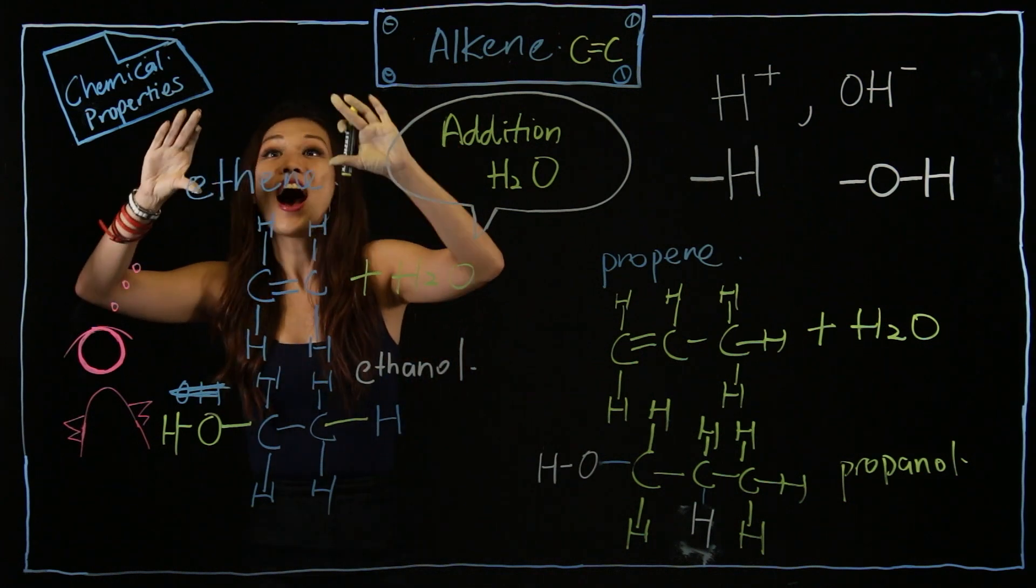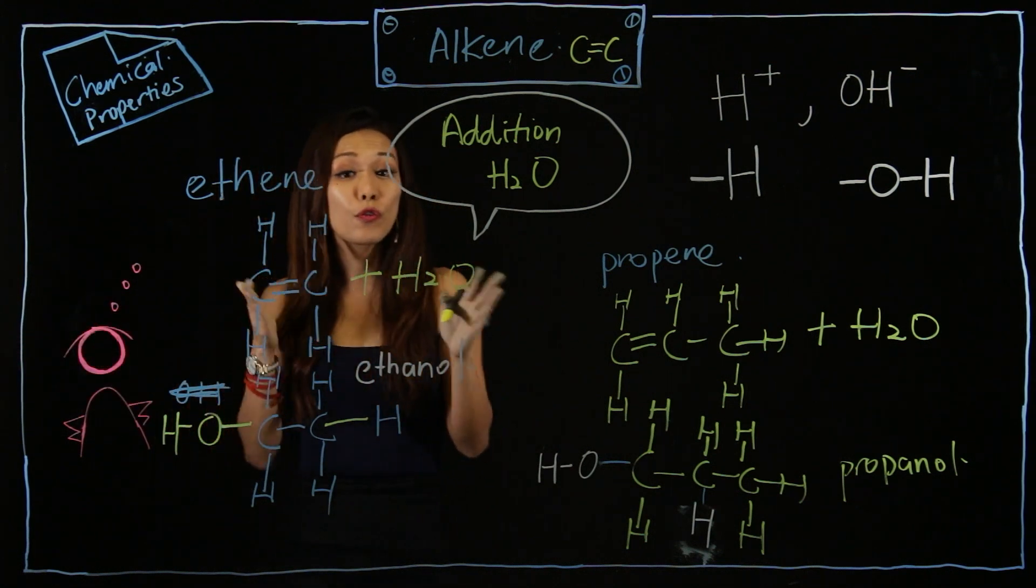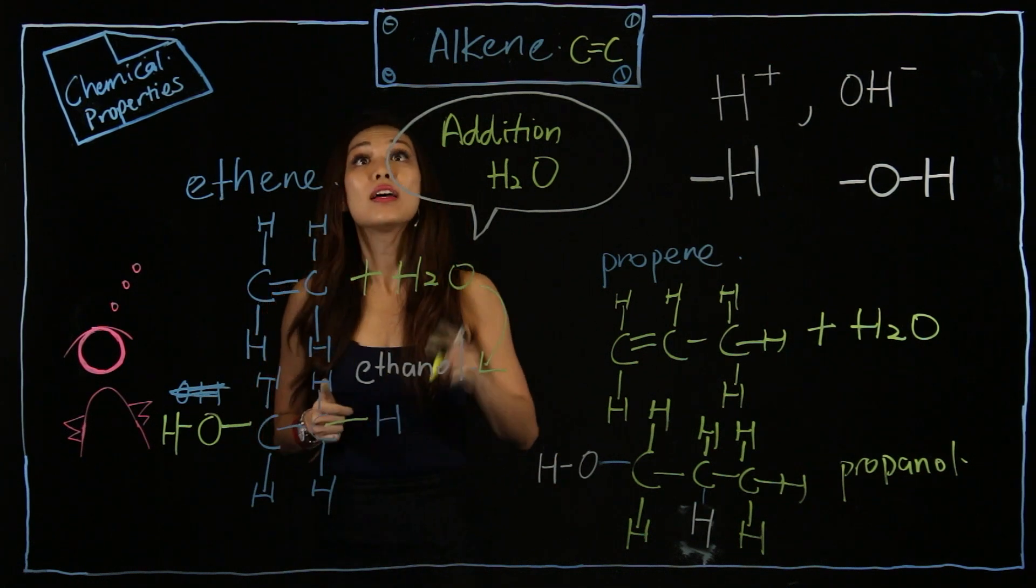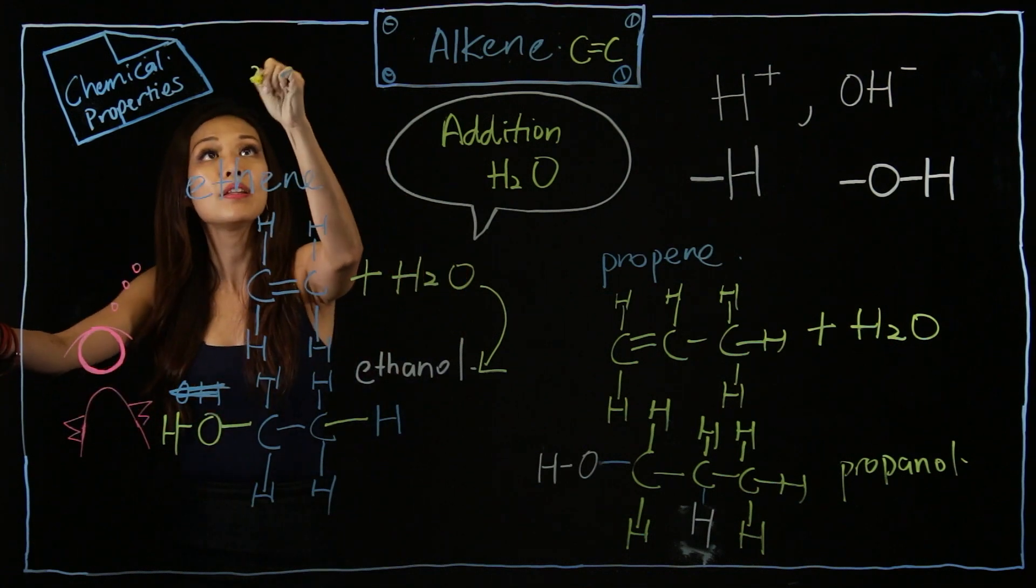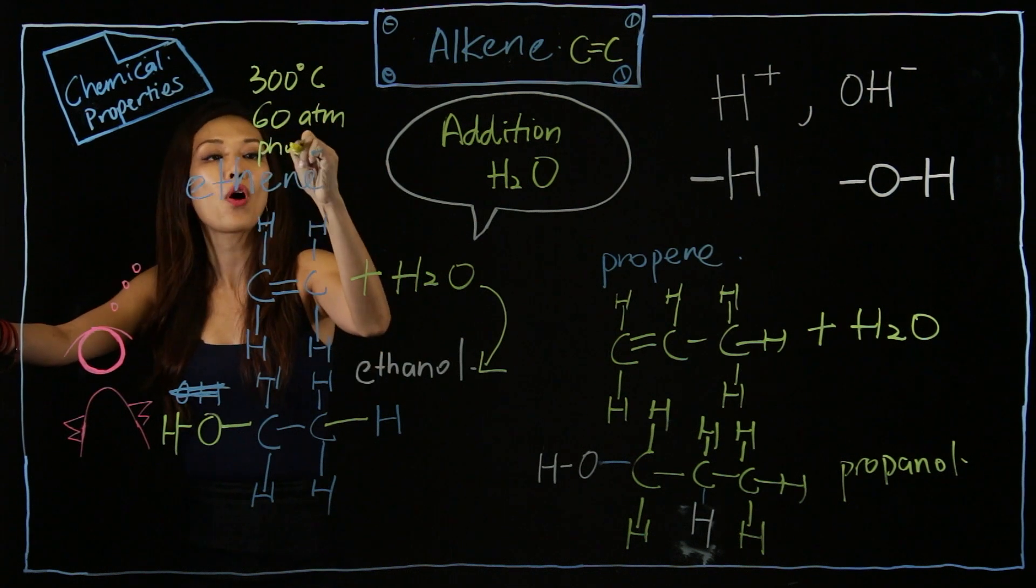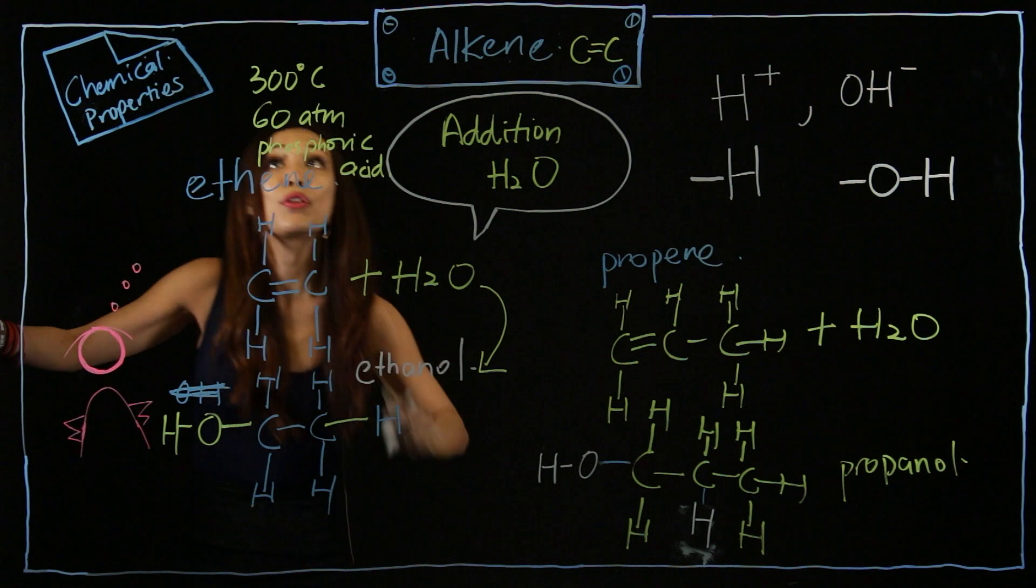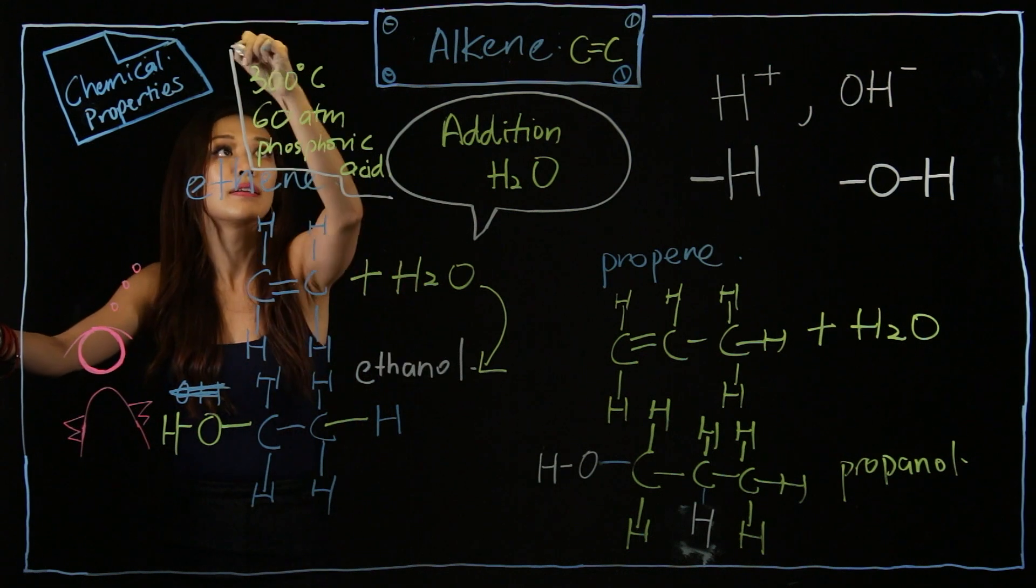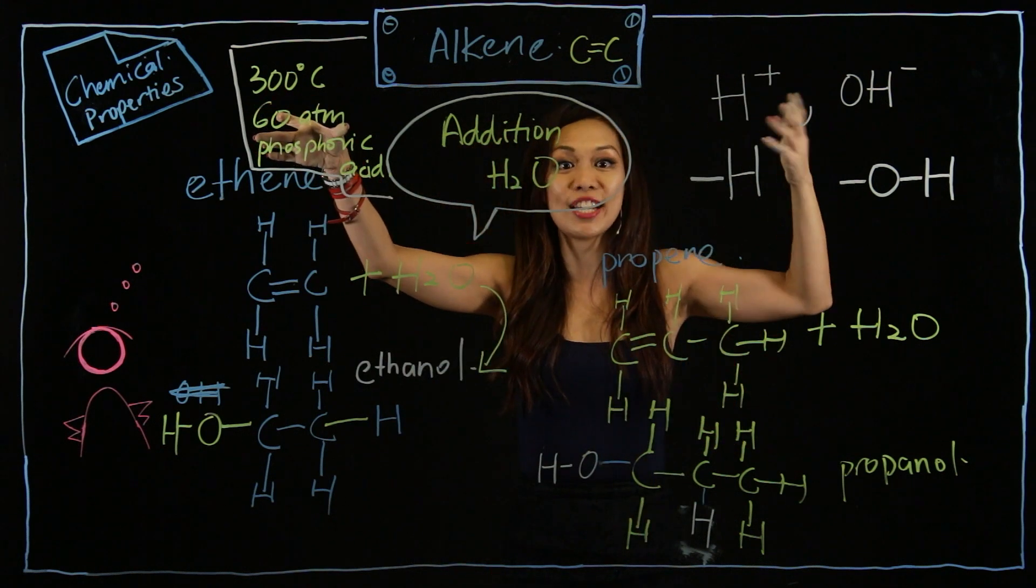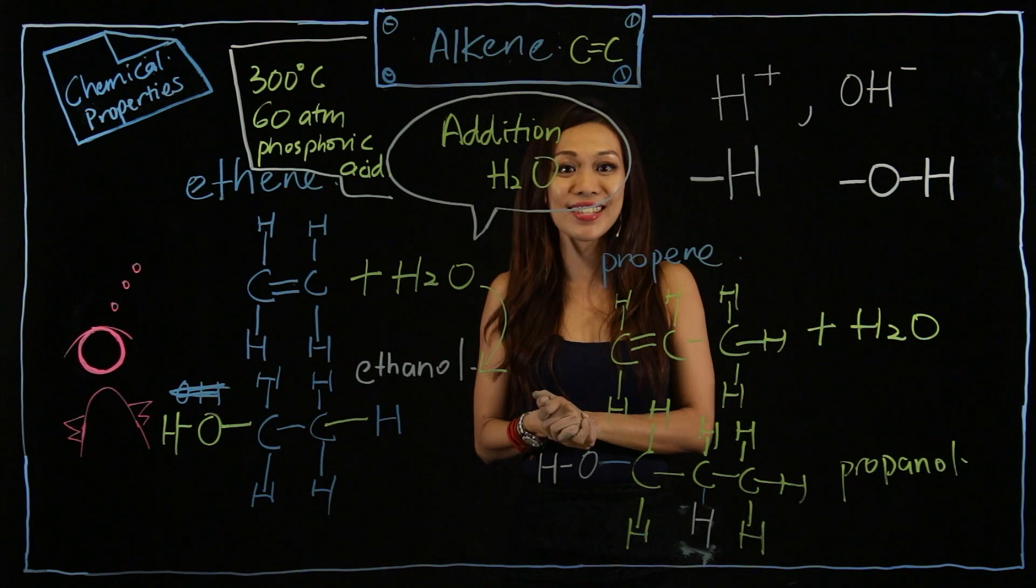Now, this is called hydration, or hydrolysis reaction. Now, when I add water over here at this part, there's a few conditions that you must bear in mind. So what are the conditions? Well, the conditions are this. You need to have burn at 300 degrees Celsius, 60 atmospheric pressure, with phosphoric acid. So these are the three things that you have to bear in mind. 300 degrees Celsius, 60 ATM, not the ATM machine, atmospheric pressure, and phosphoric acid as one of the main catalysts. So did you get this?